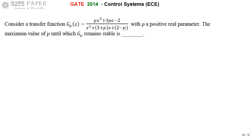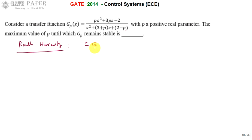Look at the transfer function given — p is a real positive number and we need to find the maximum value of p until which the given transfer function is stable. Stability can be specified from the transfer function using Routh-Hurwitz criteria. The Routh-Hurwitz criteria requires the characteristic equation to specify stability.